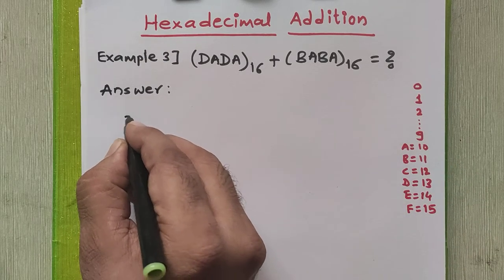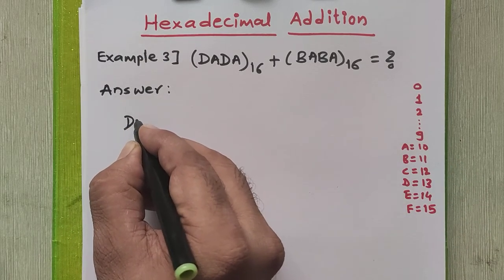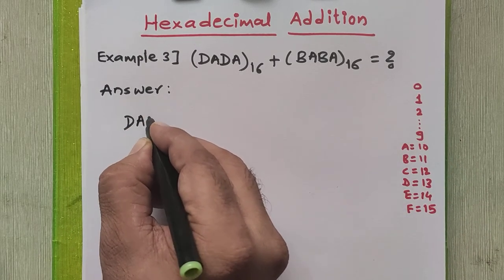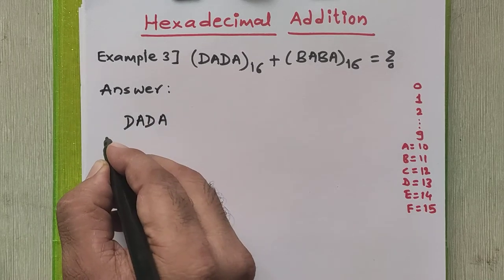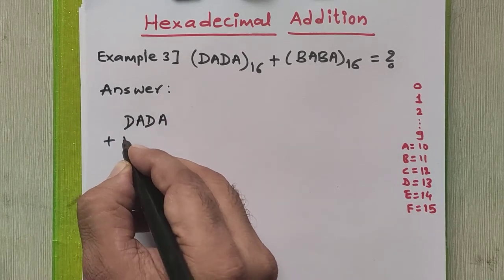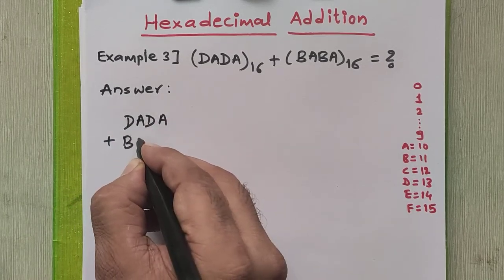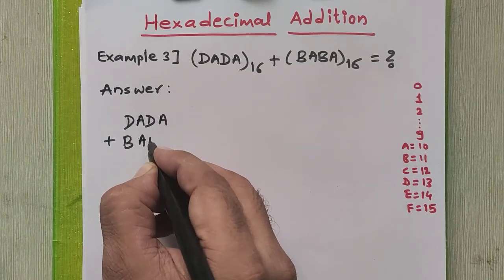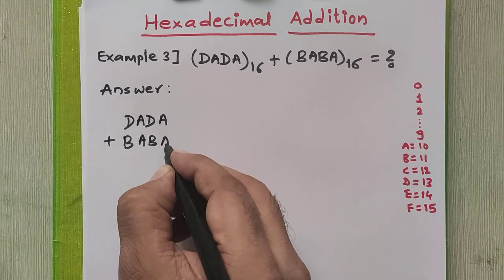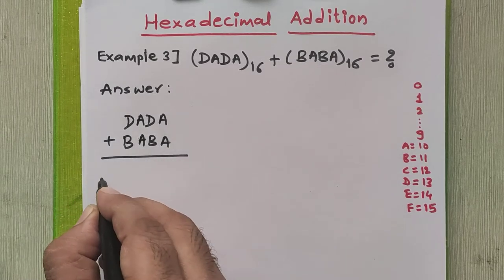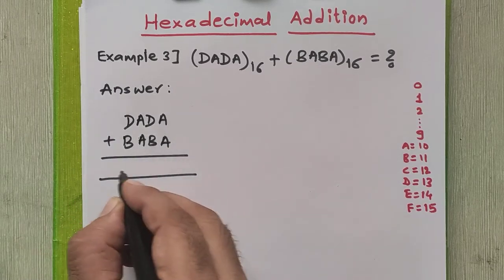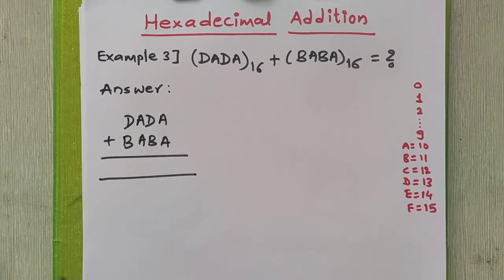We will write the digits given to us as they are: DADA plus BABA. We will write our final answer into this space.